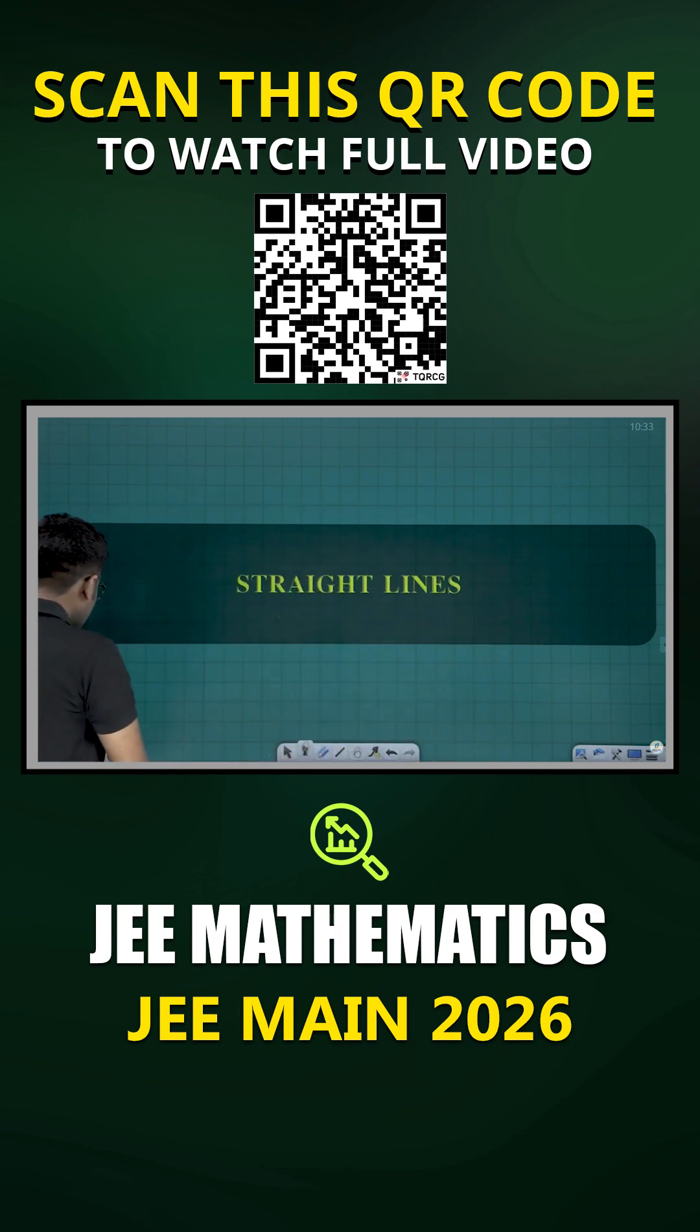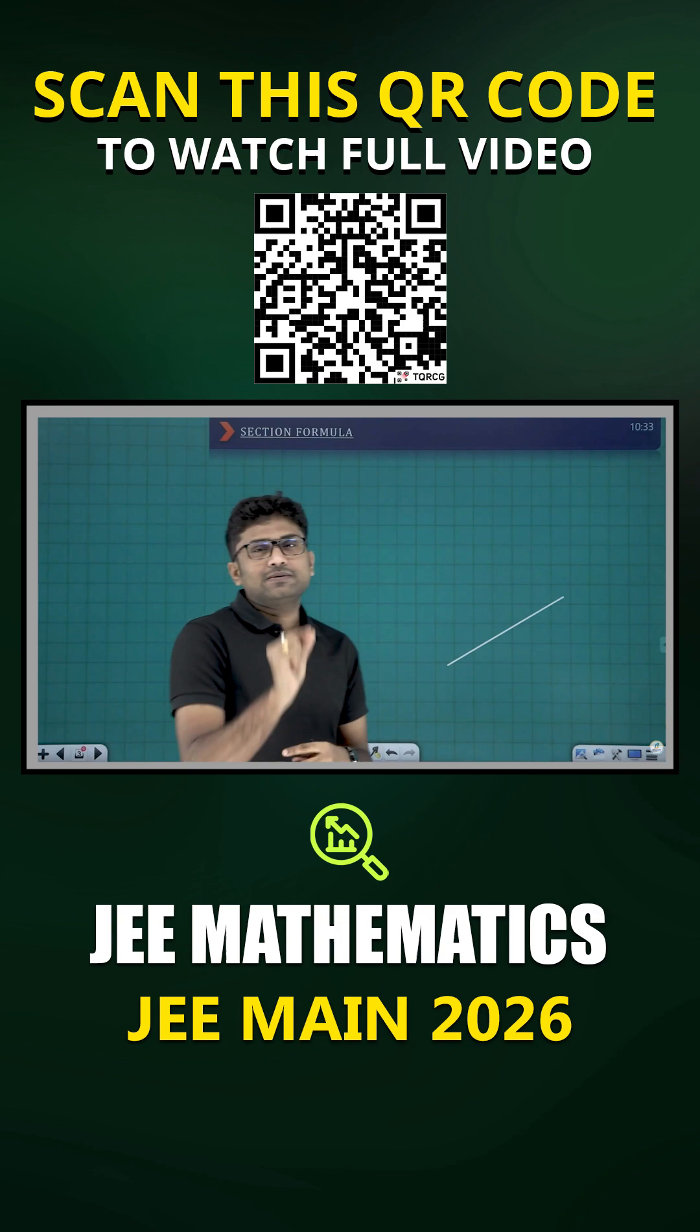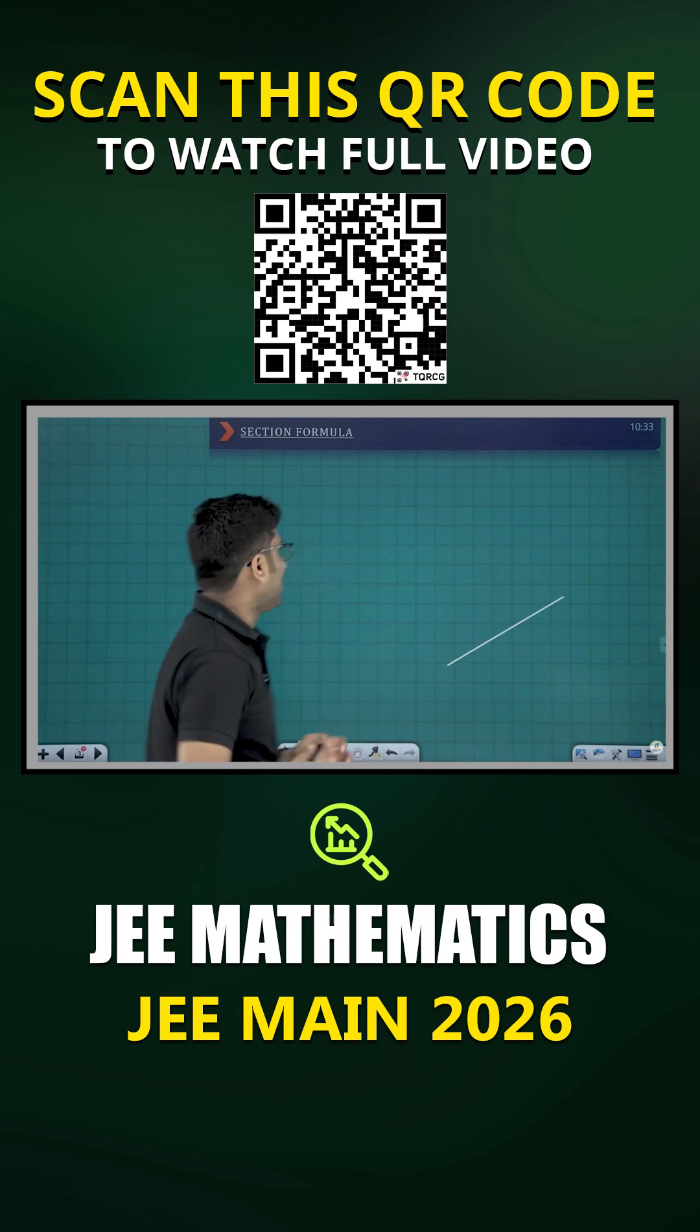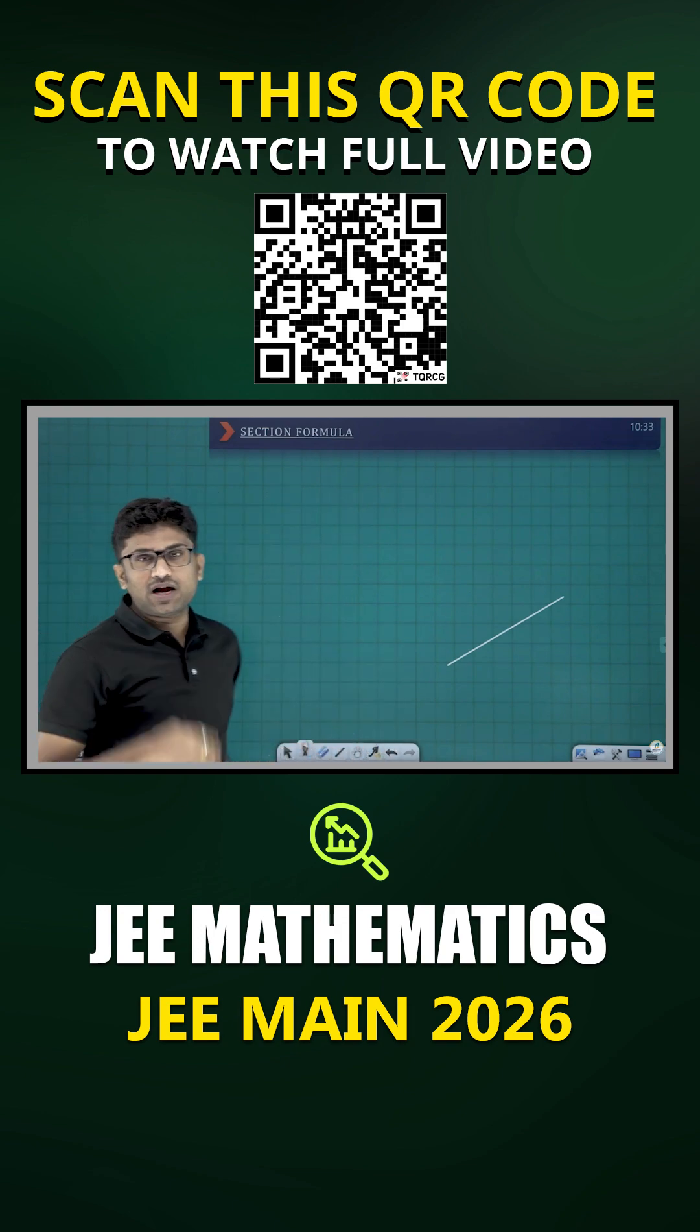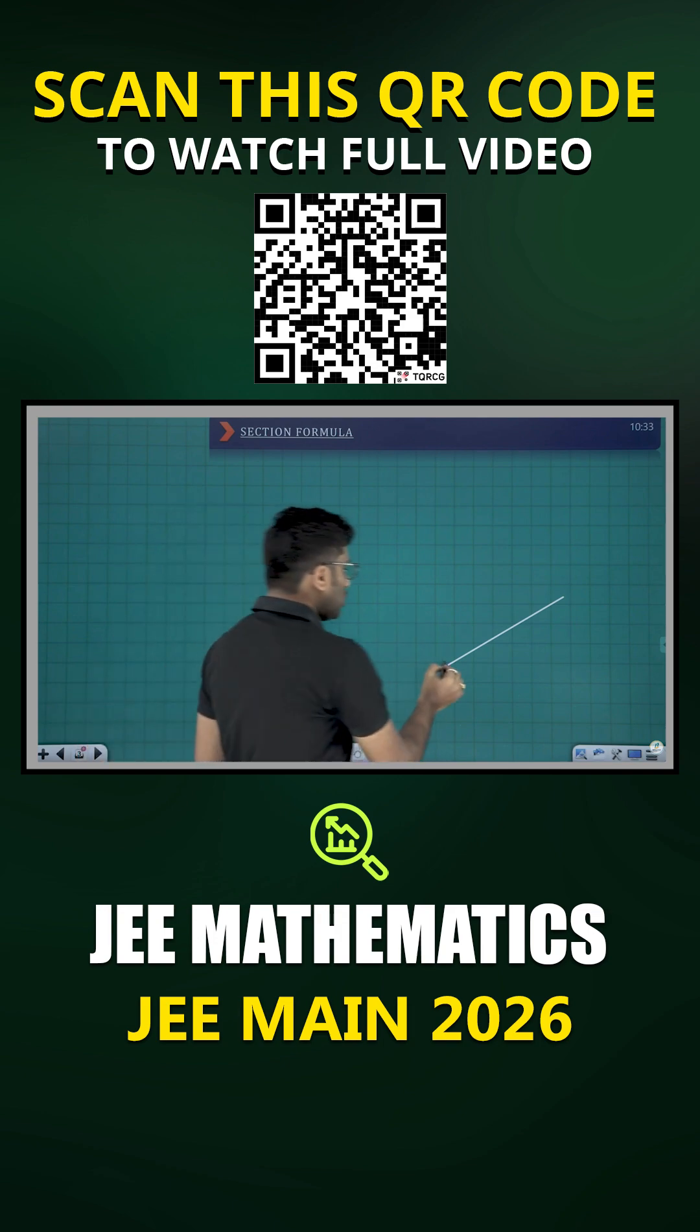Friends, in straight lines we'll go with the basic formulas from the two-dimensional geometry part: section formula and distance formula. So first we'll go with the distance formula.